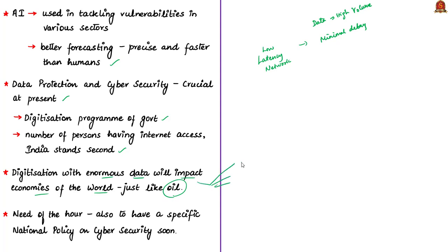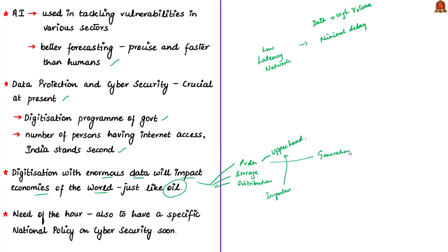In the oil sector, oil-producing countries have the upper hand in determining oil prices, which greatly impacts oil-dependent countries. Similarly, there is now data generation, data storage, data processing, and data-based businesses that can generate income for nations — or even for foreign countries from Indian citizens' data. India is generating a huge amount of data, and the government is pressing for data localization, meaning data of Indian citizens shall be stored only within Indian territory, so that the data benefits mostly the Indian economy.